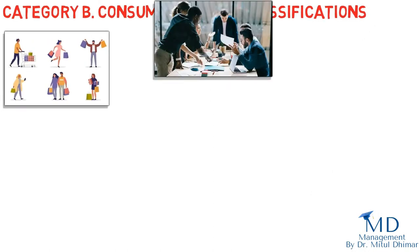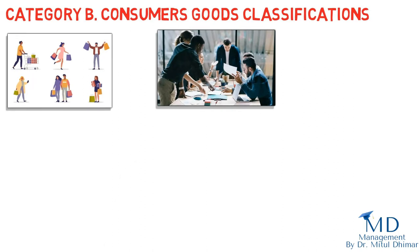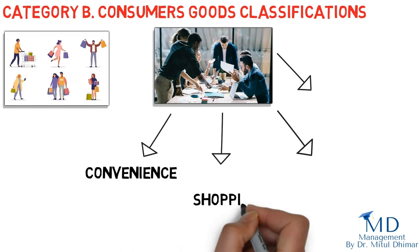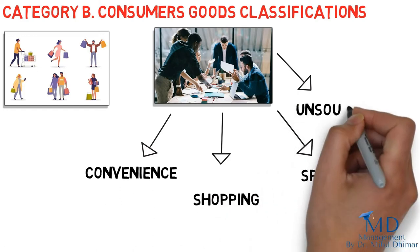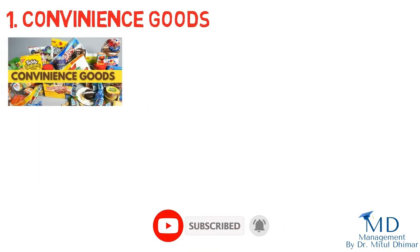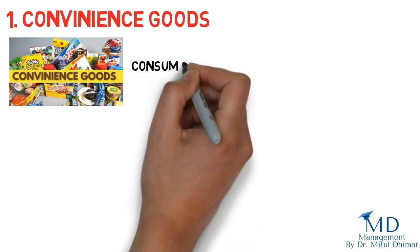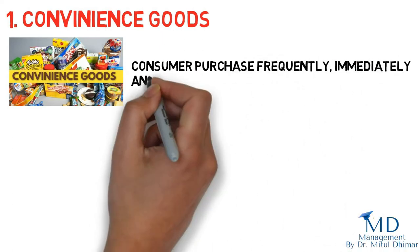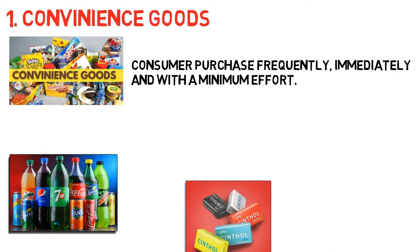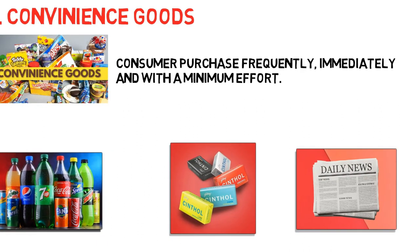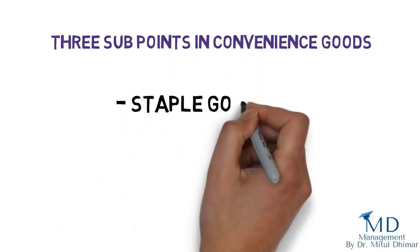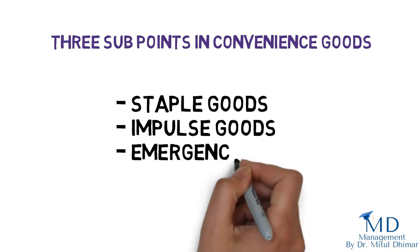Category B: Consumer Goods. Classification is based on consumer buying patterns. Marketers group consumer goods into four categories: convenience, shopping, specialty, and unsought goods. Number one: convenience goods. Convenience goods are those which consumers purchase frequently, immediately, and with minimum effort. Examples include soft drinks, soap, and newspapers. Convenience goods have three sub-types: staple goods, impulse goods, and emergency goods.